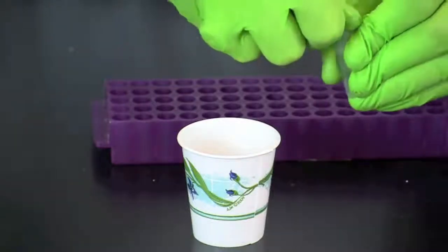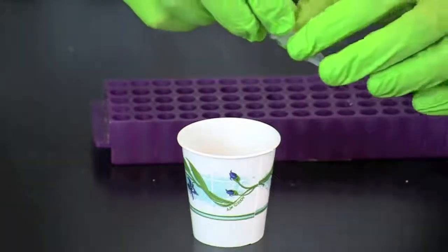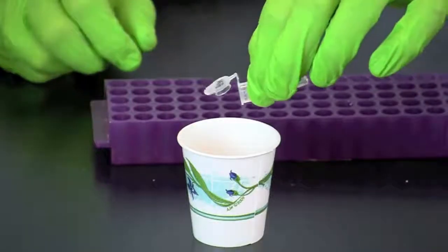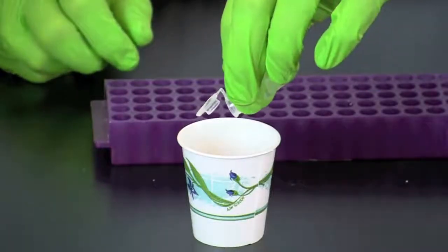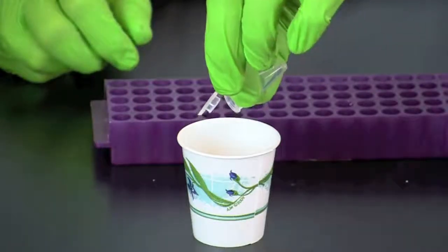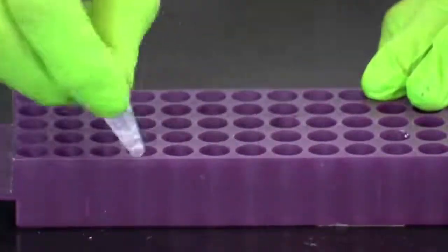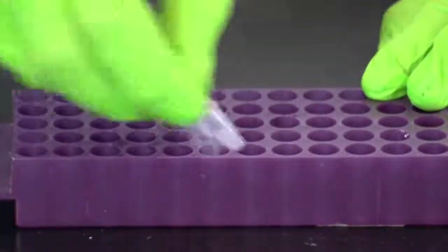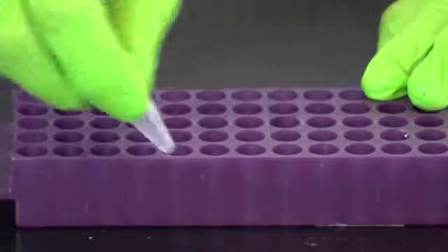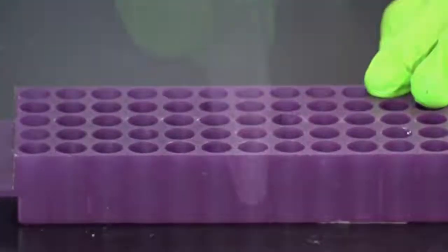After pelleting the cells, pour off the saline solution. Be careful not to lose the pellet. A small amount of saline should remain at the bottom of the tube. Re-suspend the pellet by rubbing the tube over a microtube rack to break up the clumps. Vortexing or flicking the tube can also be used so that no clumps remain.